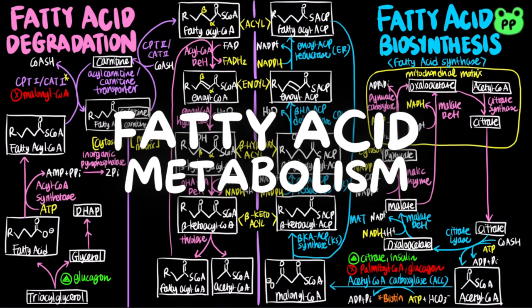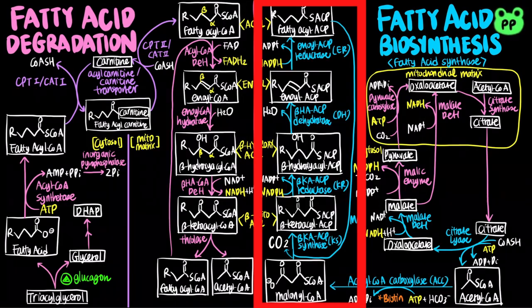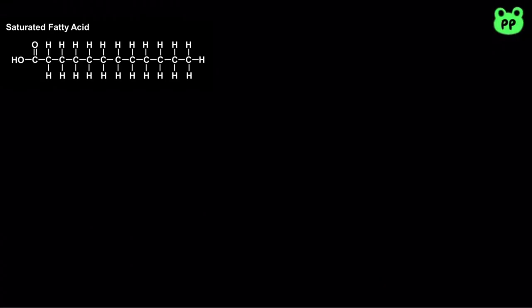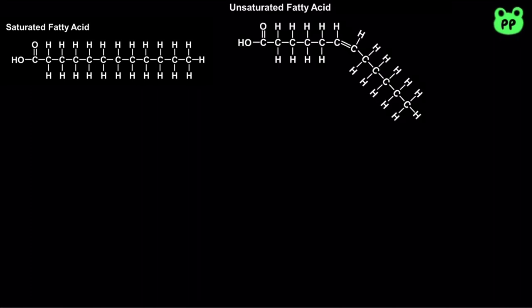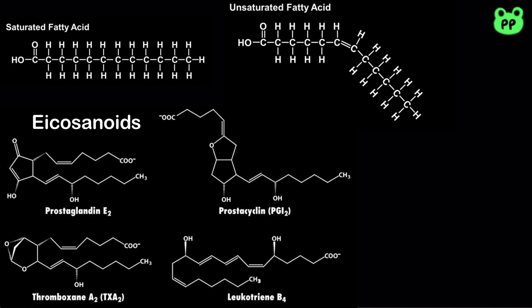In my previous video titled Fatty Acid Metabolism, I covered how saturated fatty acid is synthesized by fatty acid synthase. In this video, I'm going to cover the biosynthesis of unsaturated fatty acids, which contains one or more double bonds, and eicosanoids, which are derived from polyunsaturated fatty acids.